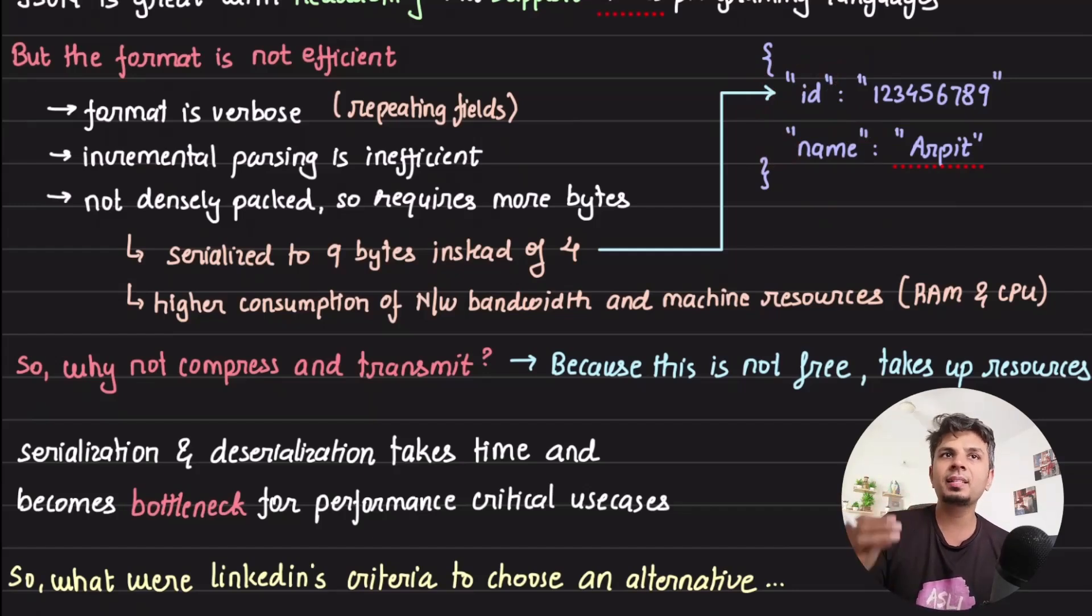Looking at this format, the format is filled with brackets - in case of list it's wrapped with square brackets, otherwise it's wrapped with curly braces. What happens is the incremental parsing of this format becomes expensive. You would have to almost always load the entire JSON to understand what the structure is about. So incremental parsing is inefficient.